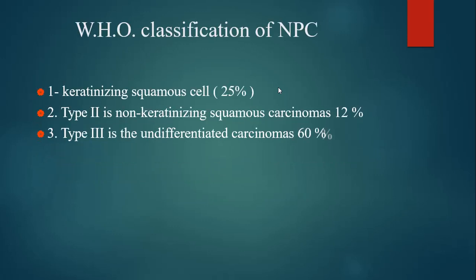There are 3 WHO types of nasopharyngeal carcinoma. Type 1 is keratinizing squamous cell carcinoma, comprising 25%. Type 2 is non-keratinizing squamous cell carcinoma, comprising 12%. And type 3 is undifferentiated carcinoma, which is the most common at 60%.